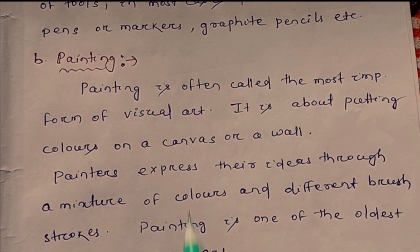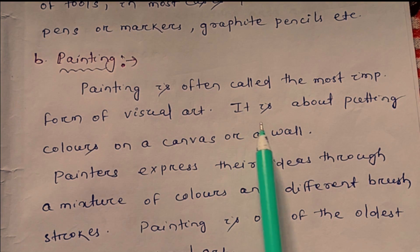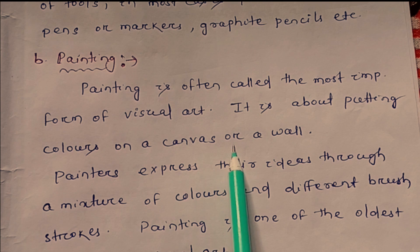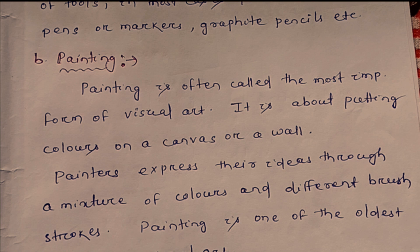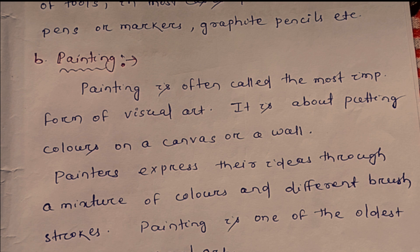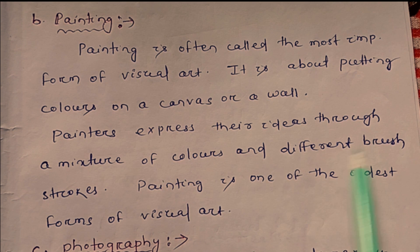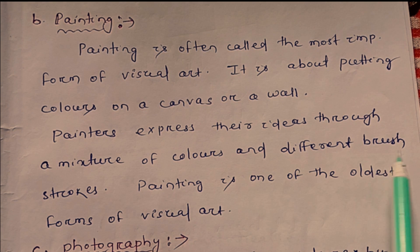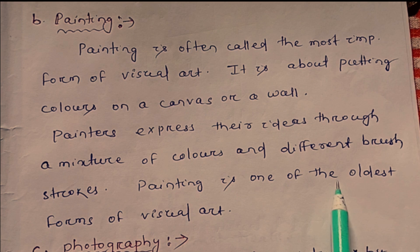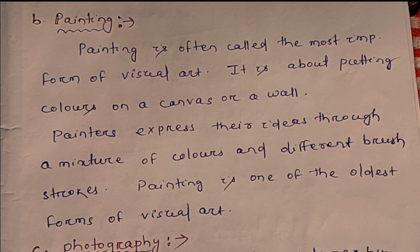The second form is painting. Painting is often called the most important form of visual art. It is about putting colors on a canvas or a wall. Painters express their ideas through a mixture of colors and different brush strokes. Painting is also one of the oldest forms of visual art.